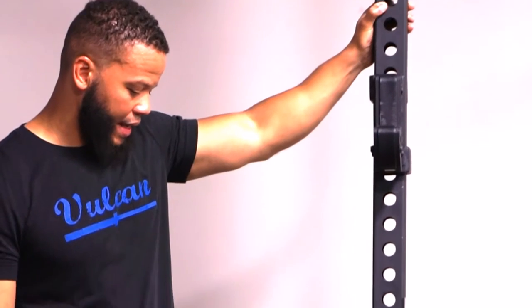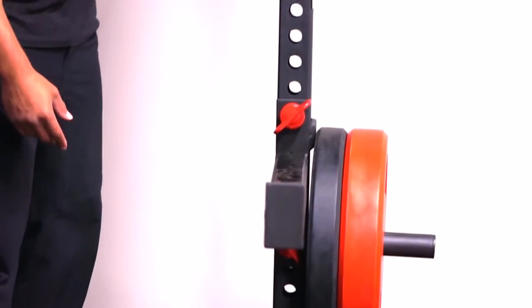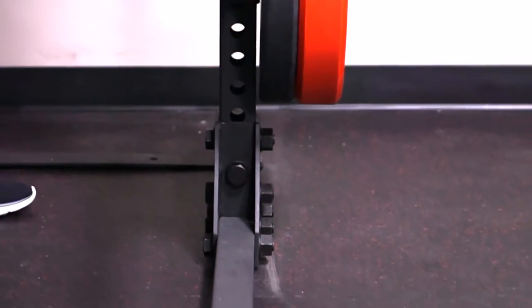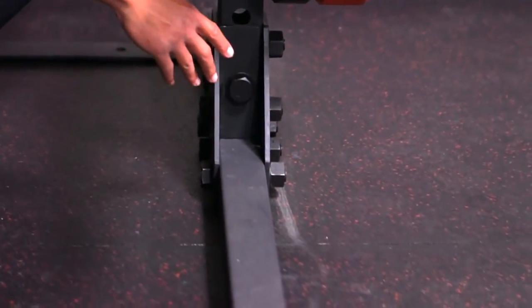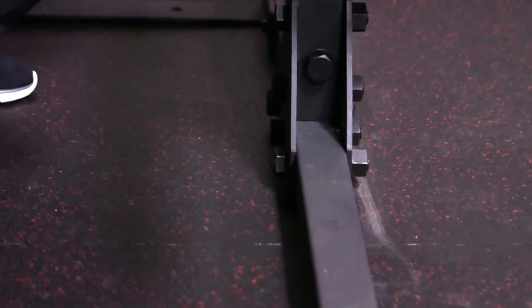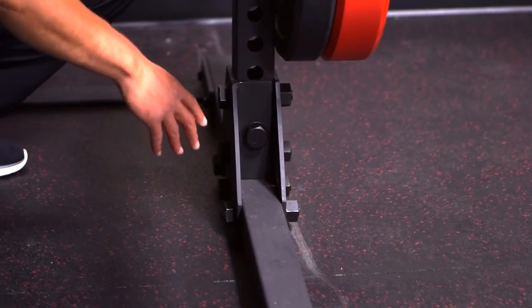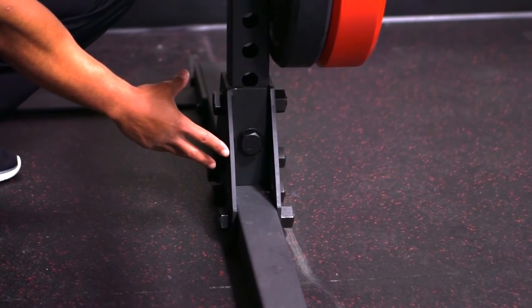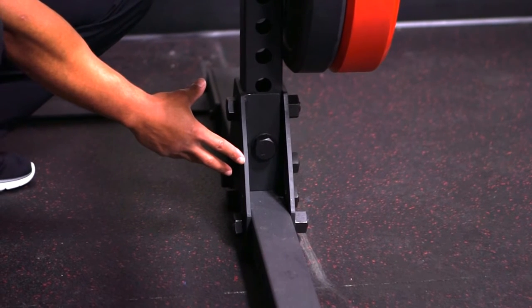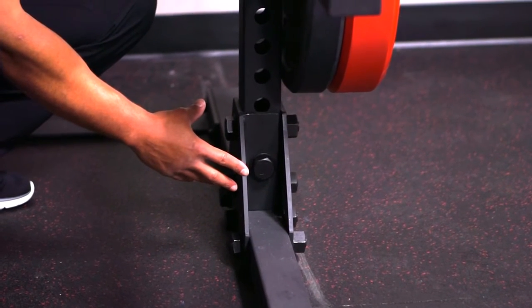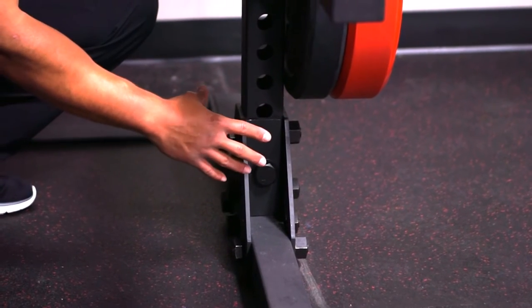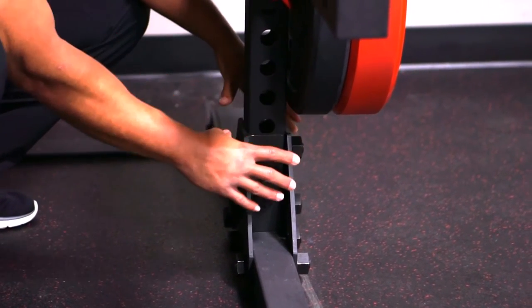If you look at the squat stand from the floor up, this is one of the most important pieces because this is where the stability of the squat stand comes from. This is where the majority of the stress of lifting or kipping or doing muscle ups, the majority of the stress...